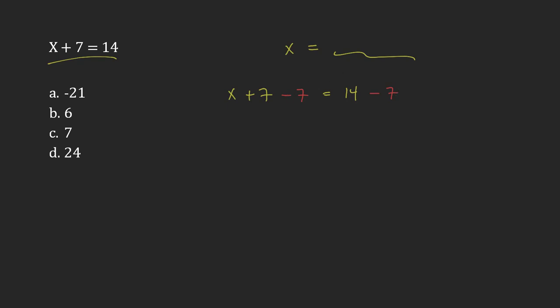So let's have a look and see what that does. Now, positive 7 and negative 7, these cancel each other out. And so I am, as I wanted to be, just left with x on this side of the equation.